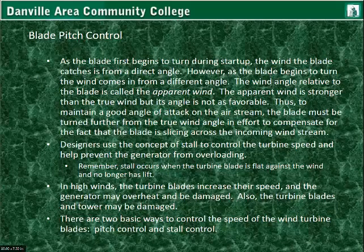To understand blade pitch control further: as the blade first begins to turn during startup, the wind hits it from a direct angle. However, as the blade begins to turn, the wind comes from a slightly different angle — at startup the blade isn't moving and the wind pushes against it, but as it begins to move it's actually slicing the air. The wind angle relative to the blade is called the apparent wind. The apparent wind is stronger than the true wind, but its angle is not as favorable, so to maintain a good angle of attack, the blade must be turned further from the true wind angle to compensate for the fact that the blade is slicing across the incoming air stream.